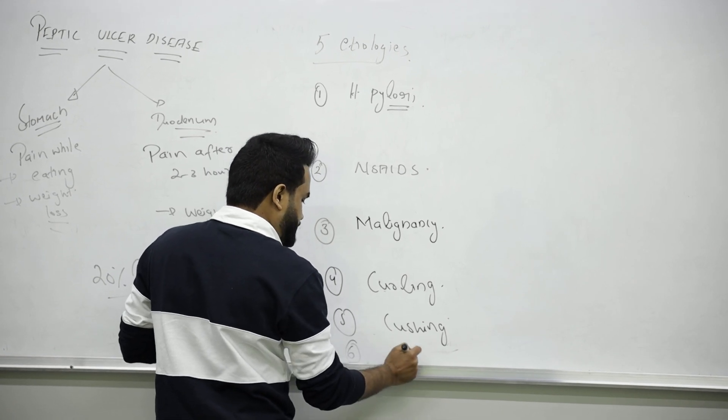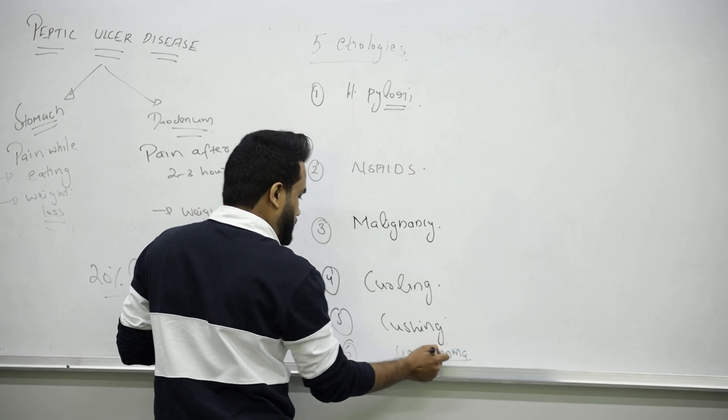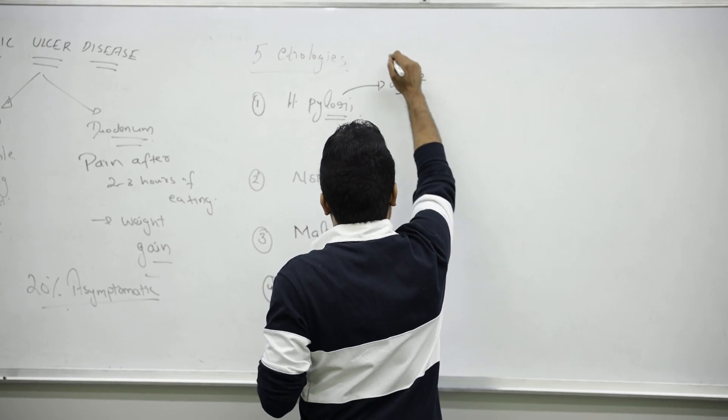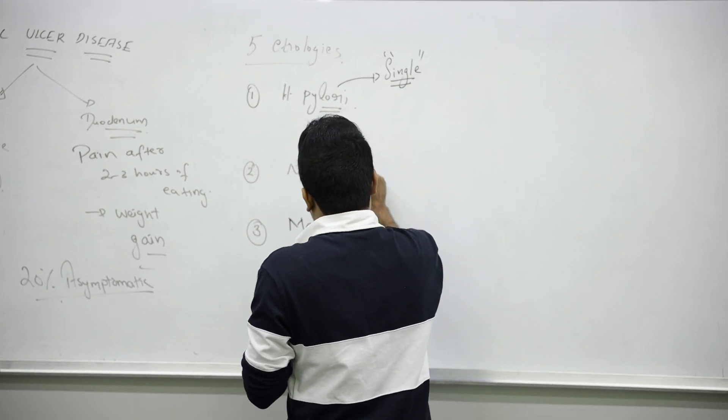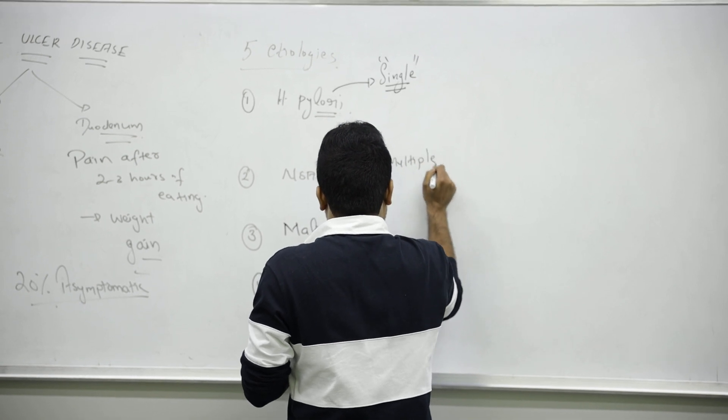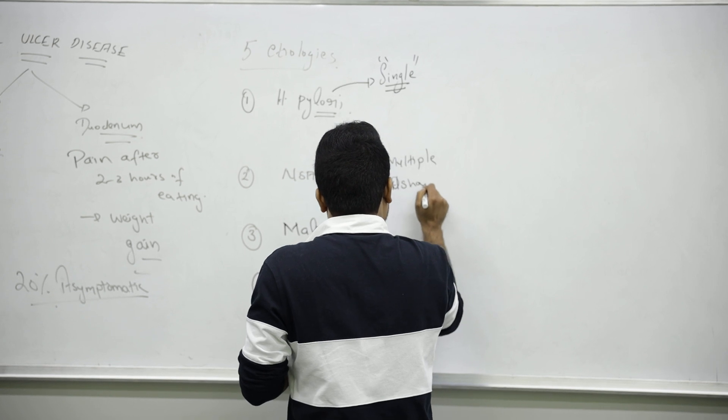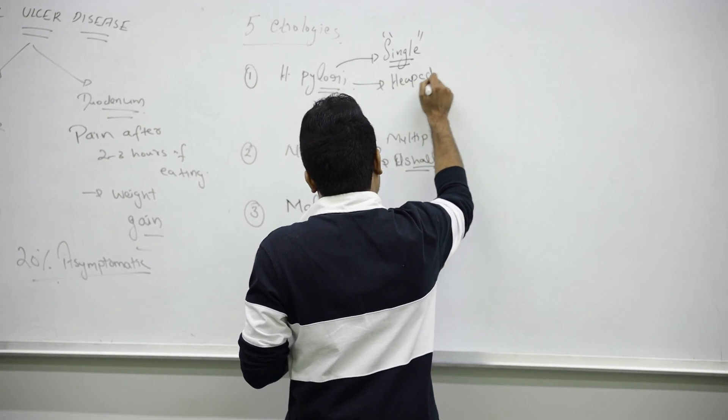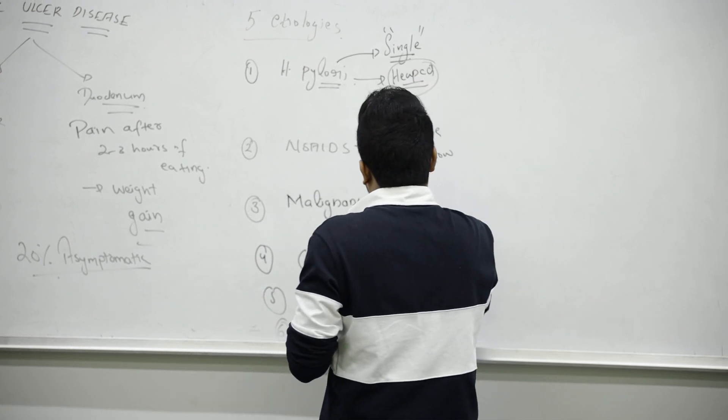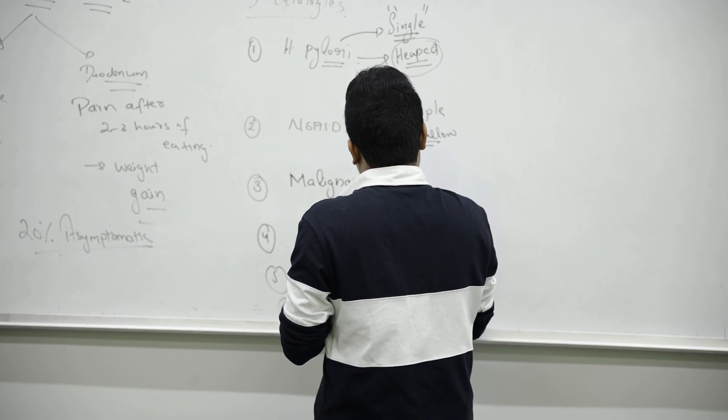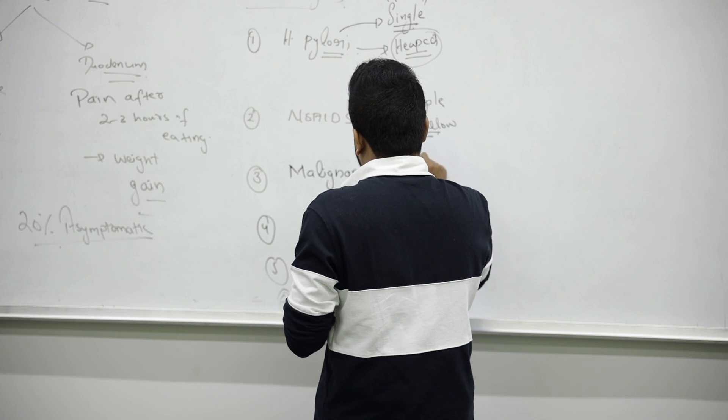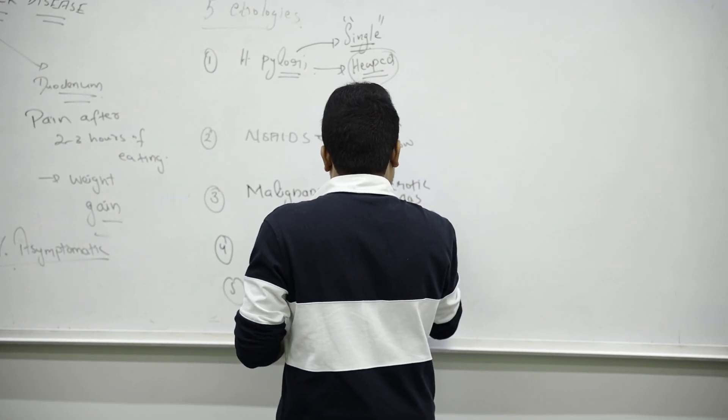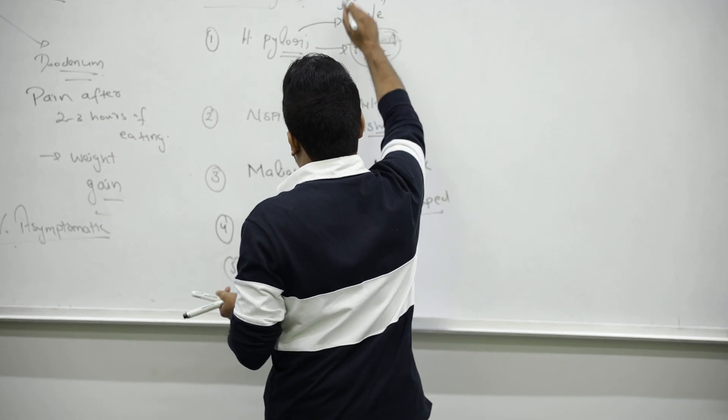Helicobacter pylori will appear single in appearance. NSAIDs cause multiple type of ulcer and it will be shallow. In malignancy, it will be a heaped type. You will see some necrotic mass.